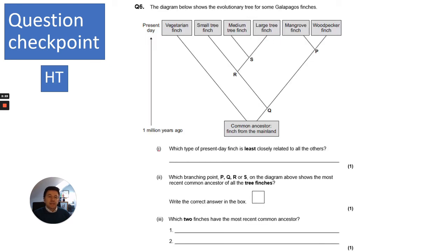Let's look at a higher tier one. This shows an evolutionary tree for the Galapagos finches. I'd like you to pause it, read, and answer in three, two, one. First question: which type of present day finch is least closely related to all the others? You need to look at which one has no links with any of the other finches. In this case, it would be the vegetarian finch. Which branching point, P, Q, R, or S, on the diagram shows the most recent common ancestor of all the tree finches? You need to look at the tree finches—small, medium, and large—and you need to go down the evolutionary trees until you find they're all related. In this case, it would be R, the most recent common ancestor. Which two finches have the most recent common ancestors? You need to look at the time scale and anything that's nearest to the present day, so it's the mangrove and the woodpecker finch at point P.